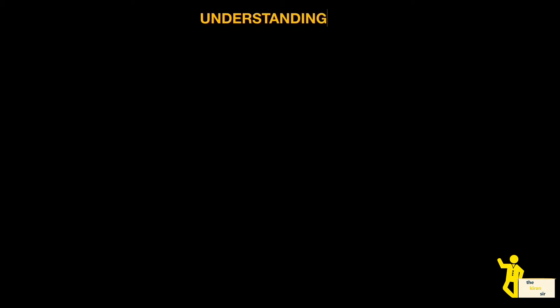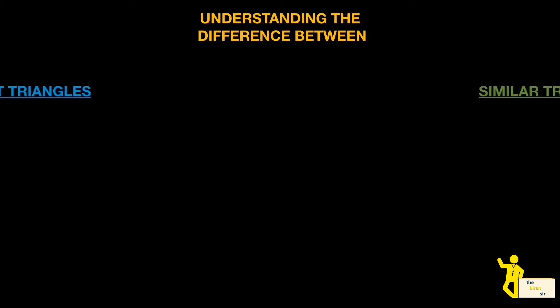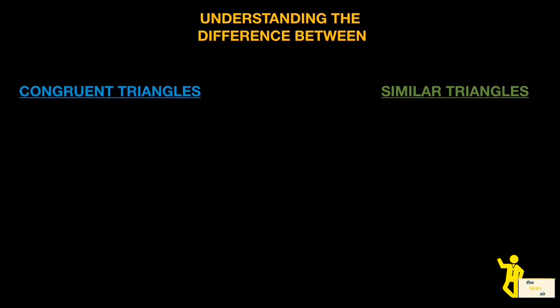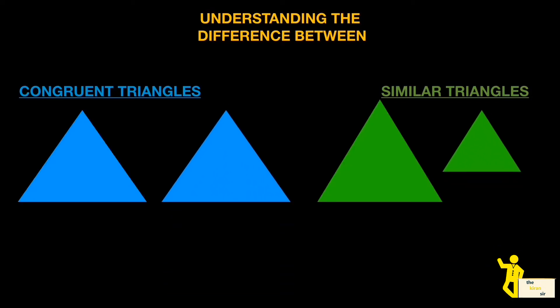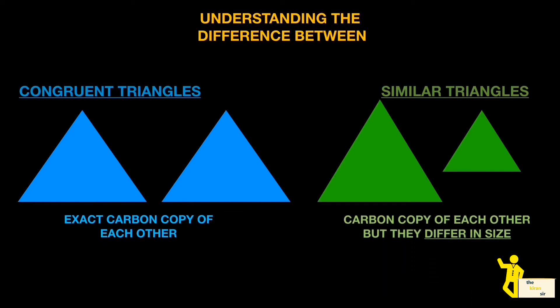Let us start by understanding the difference between congruent and similar triangles by visualizing some shapes. I'm going to introduce two blue triangles and two green triangles. The two blue triangles are exactly a carbon copy of each other — so these are congruent triangles. The green triangles are much alike but differ only in size — so the green triangles are similar triangles.